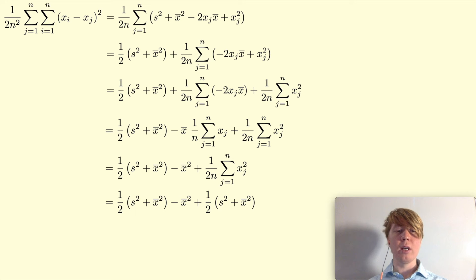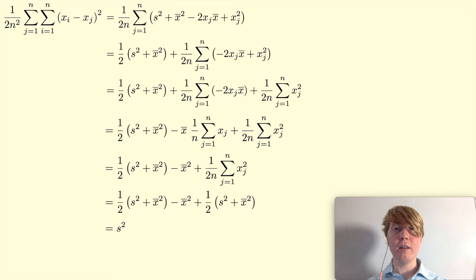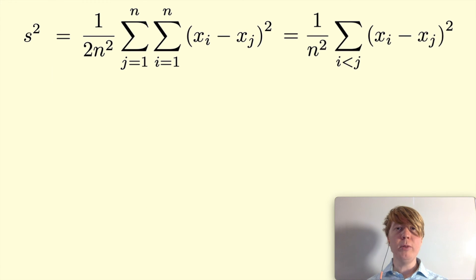Now we're almost done. Looking at all the x-bar squared terms: you've got a half x-bar squared, a negative x-bar squared, and then plus another half x-bar squared — these all cancel and disappear. All you're left with is a half s² plus another half s², which gives you s². So we've shown that this double sum is in fact equivalent to the sample variance. Now I promised two different formulas, so we'll show that this double sum on the right is also equal to the sample variance.